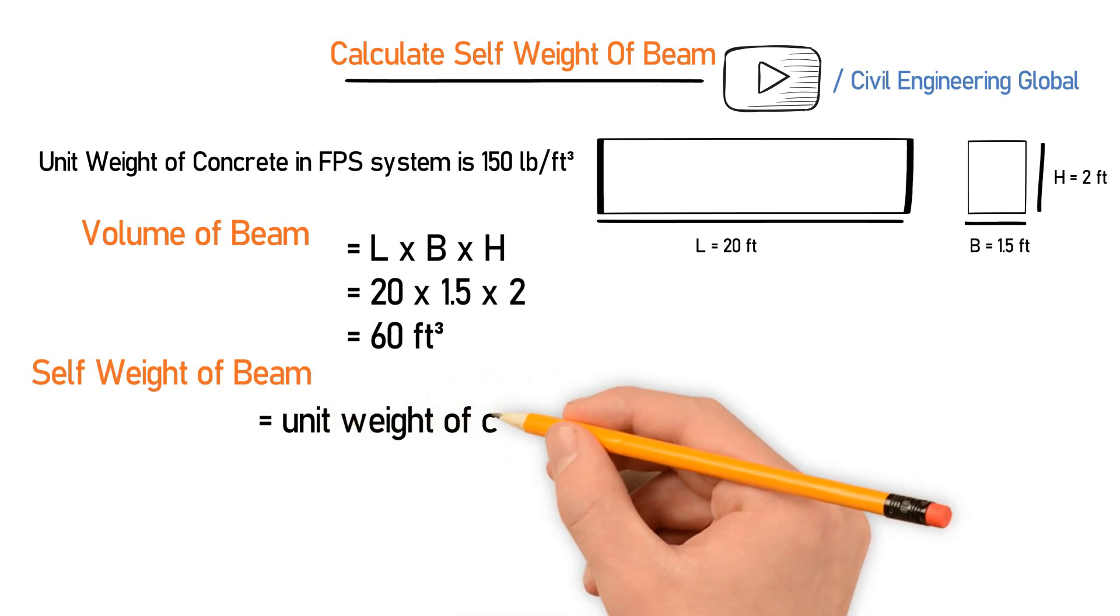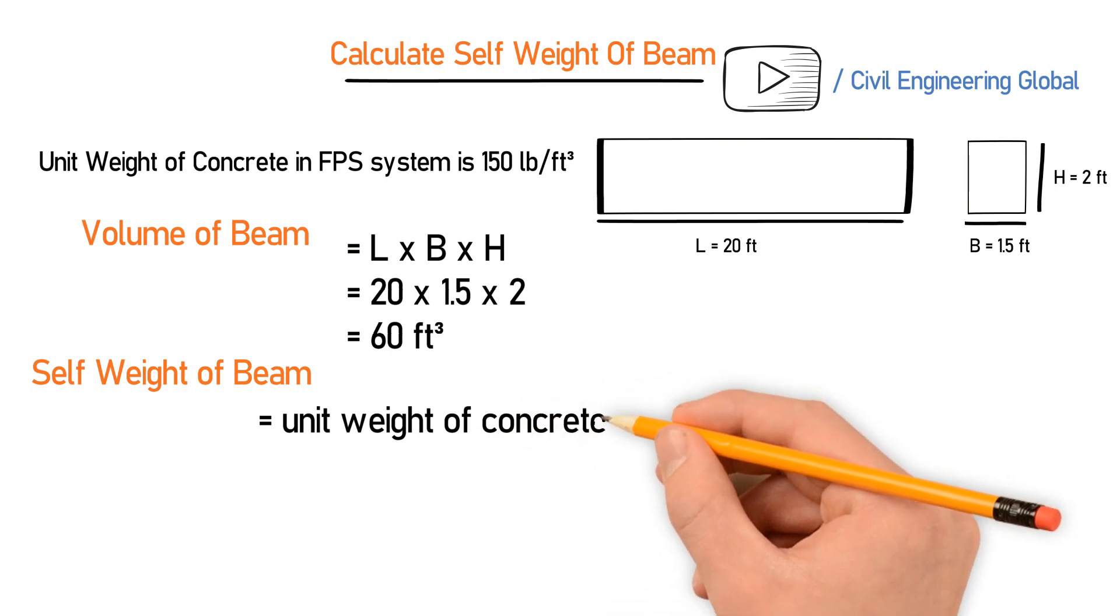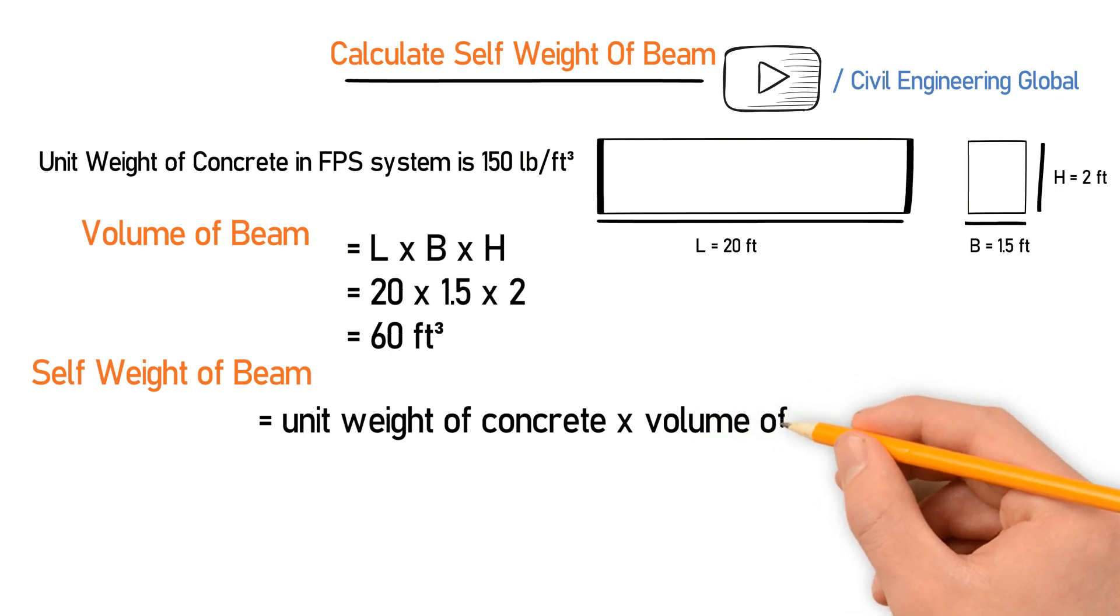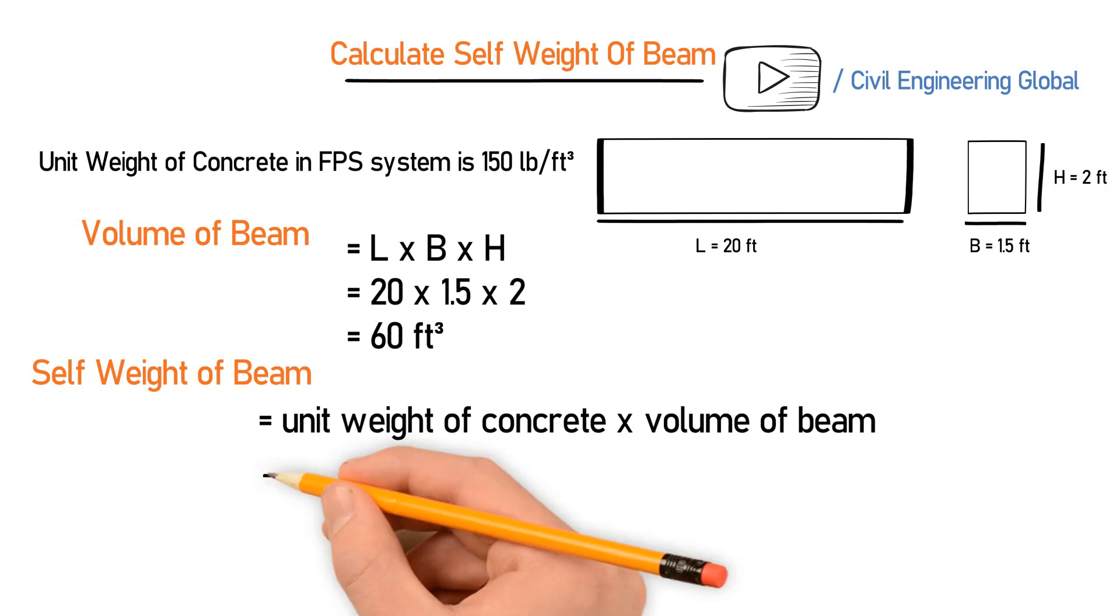The volume of beam we just calculated, and the unit weight of concrete is standard. So this is 150 multiplied by volume of beam, which is 60.